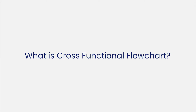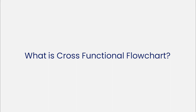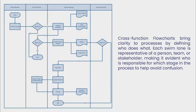Before we begin, let's understand what cross-functional flowcharts are. Cross-functional flowcharts bring clarity to processes by defining who does what. Each swim lane represents a person, team, or stakeholder, making it evident who is responsible for which stage in the process to help avoid confusion.